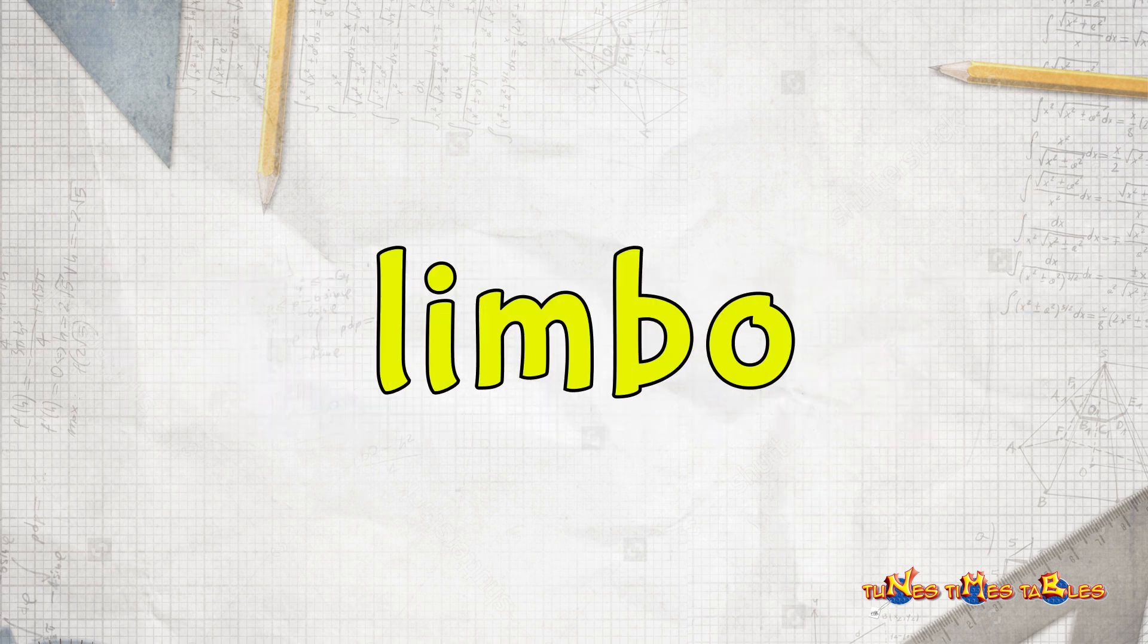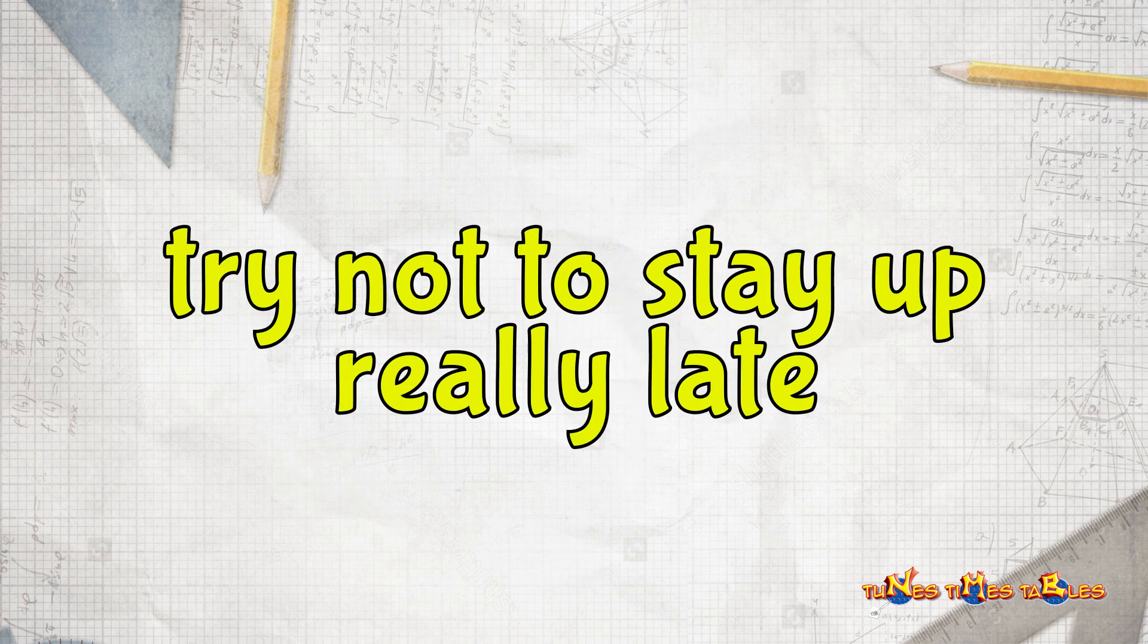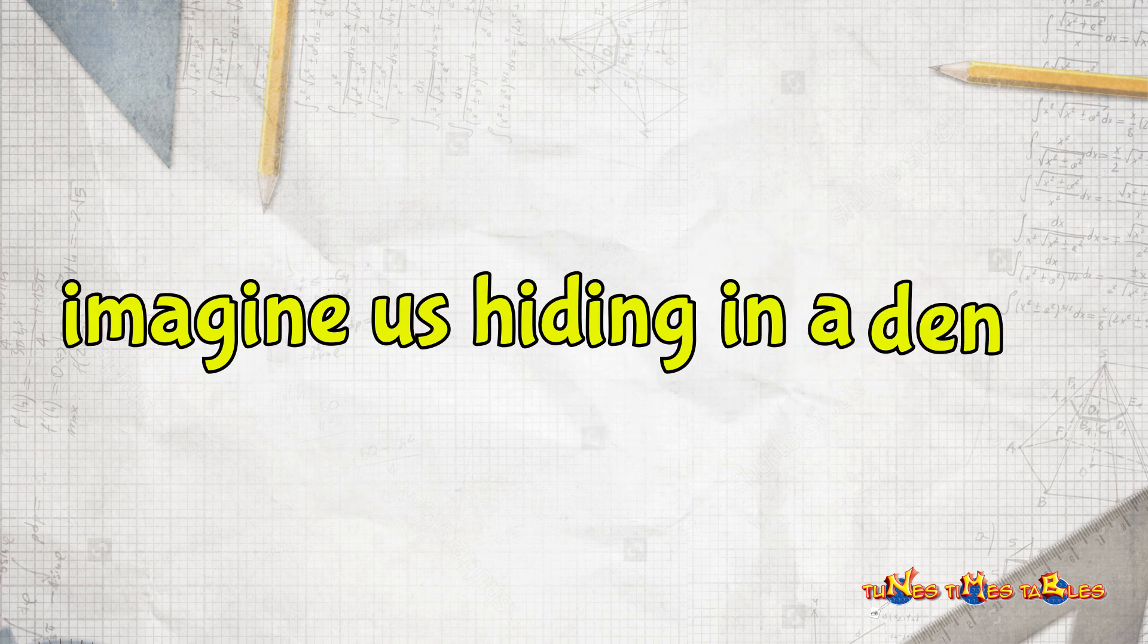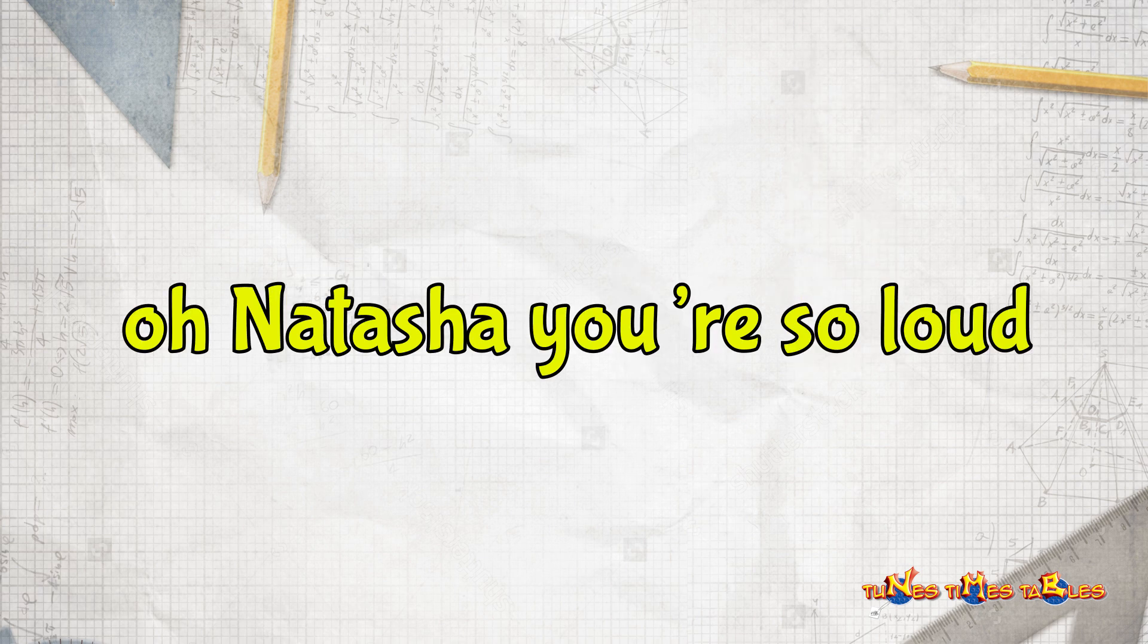Limbo to this mix, a limbo. 4 x 2 is 8. Try not to stay up really late. 5 x 2 is 10. Imagine us hiding in a den. 6 x 2 is 12. Oh Natasha, you're so loud.